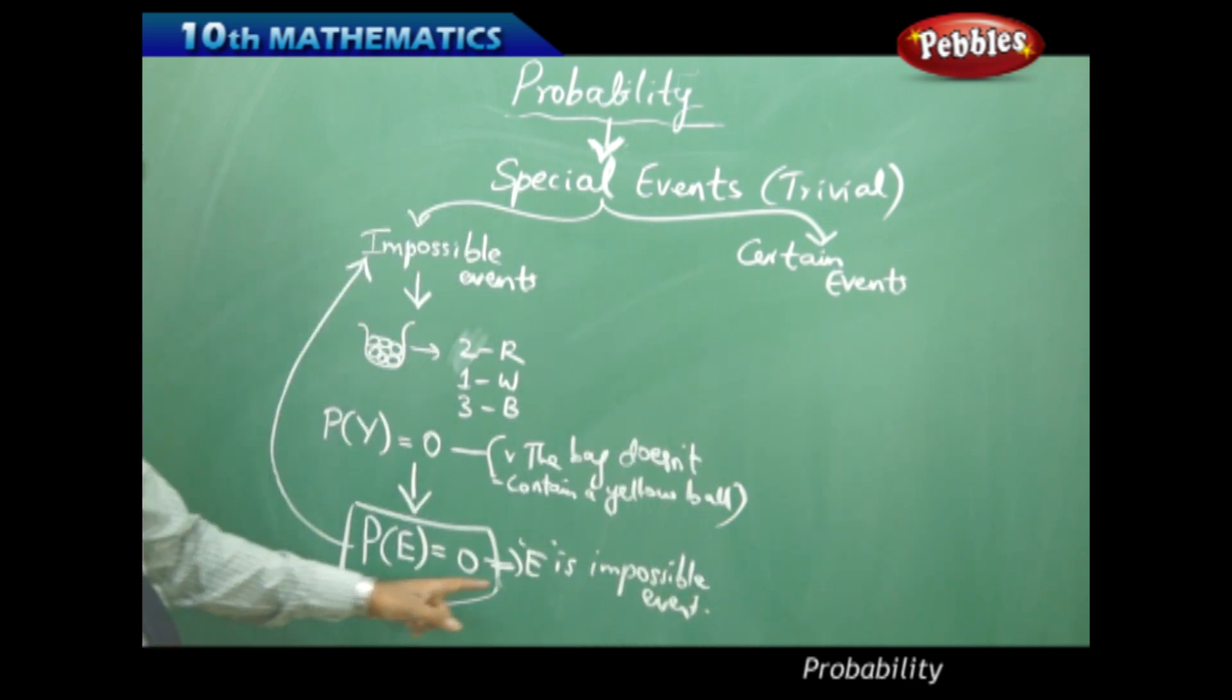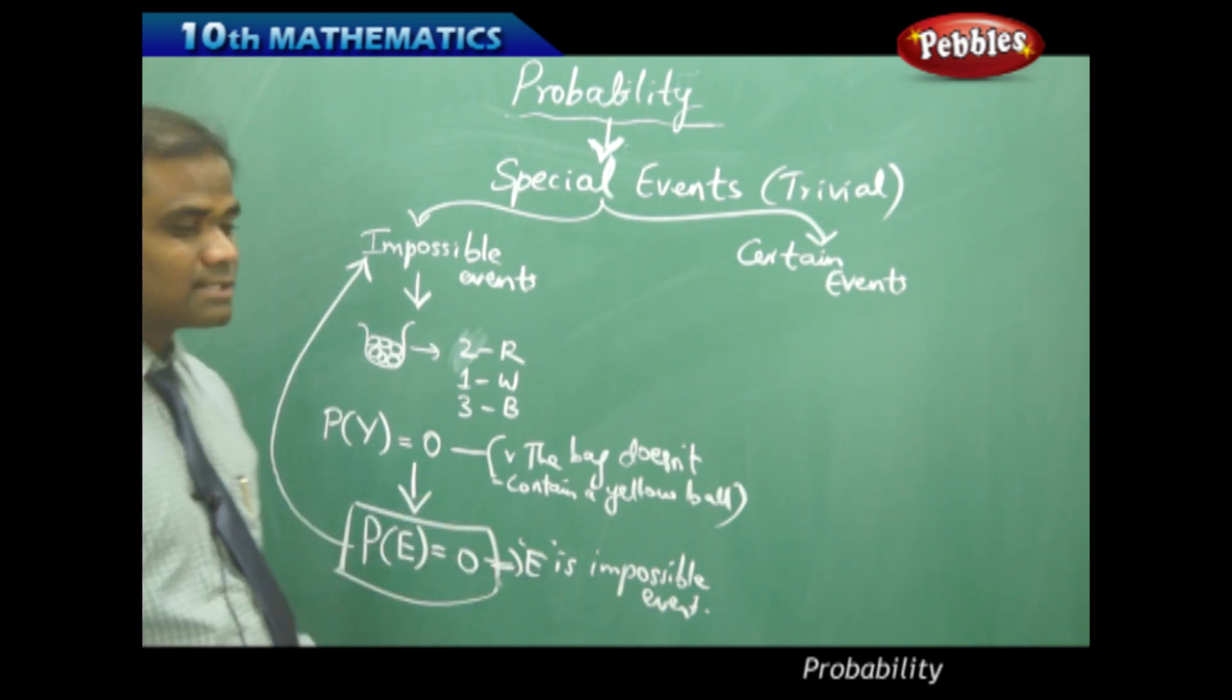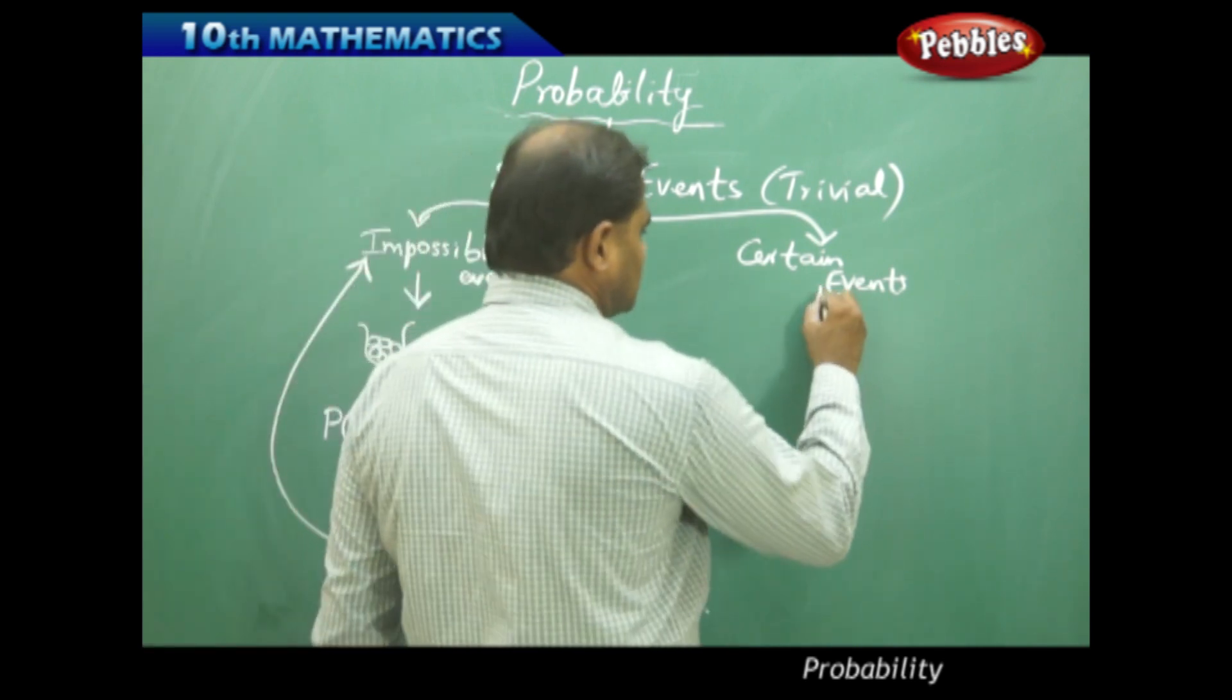So for impossible events we have P(E) equals zero. Let's see what is a certain event with a similar example.